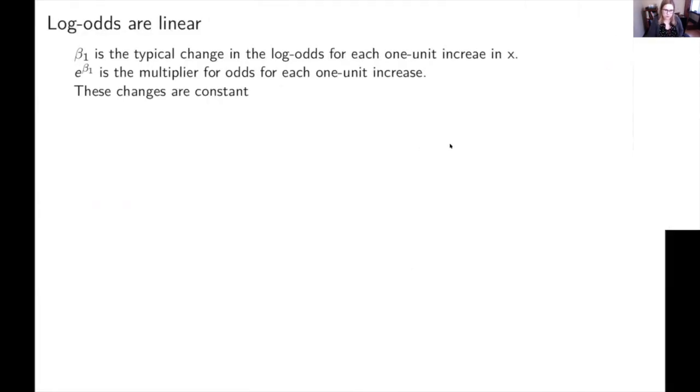So the first thing is just log odds are linear. Beta 1 is the change in the log odds for a one unit increase in X. And for odds, e to the beta 1 is the multiplier for each one unit increase. And both those changes are constant. One is like a linear change and one is a multiplicative change, but they're both constant.